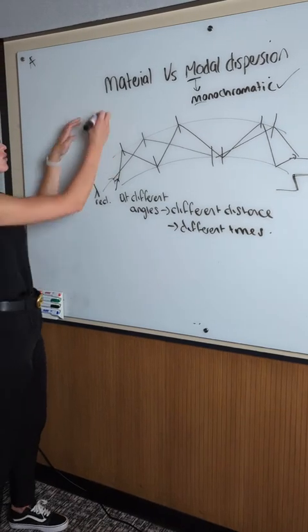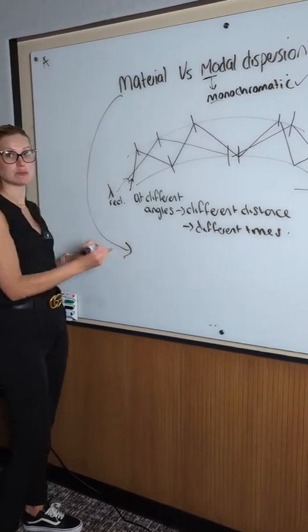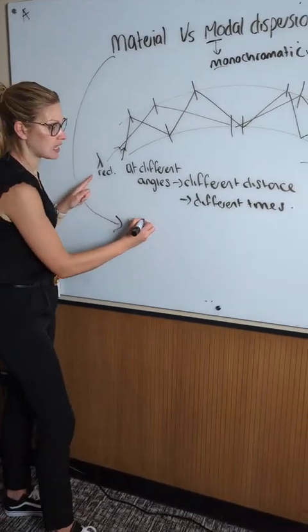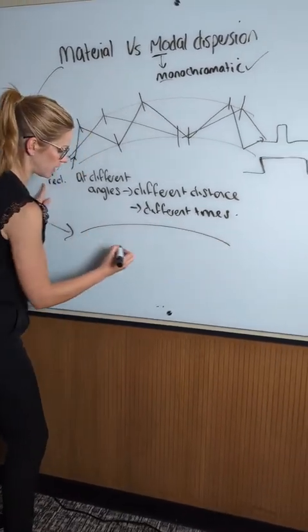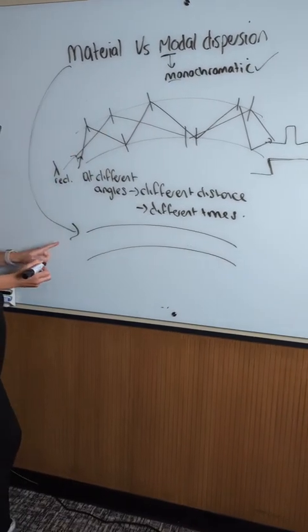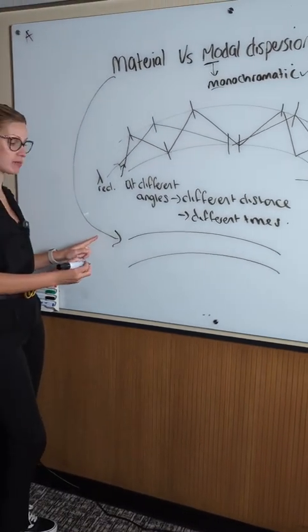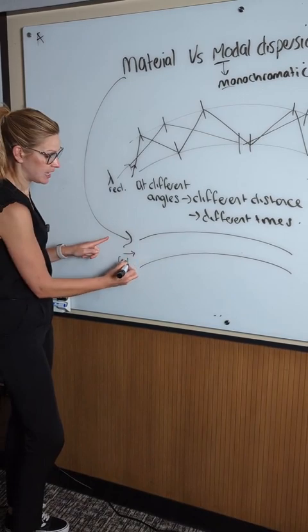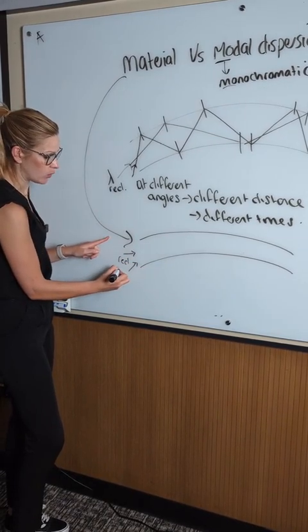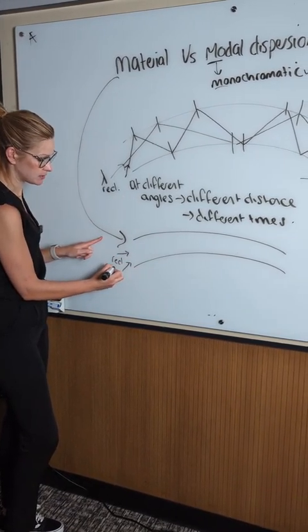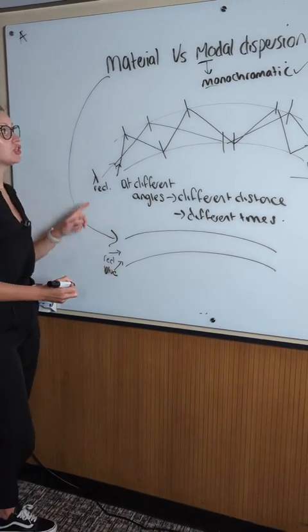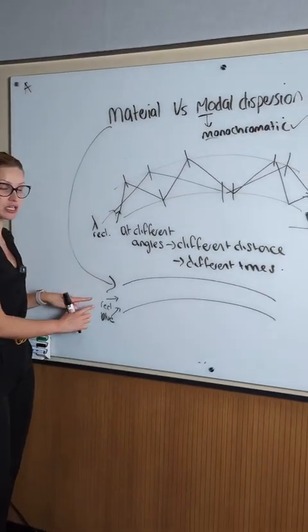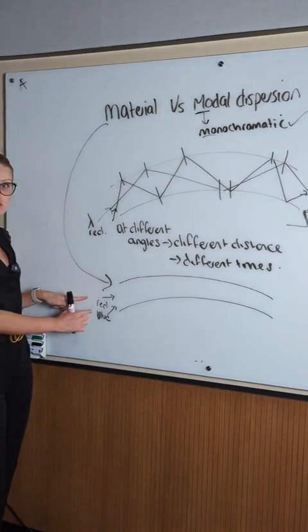So the other one — material dispersion — is because we're not using monochromatic light. So this time we're going to have our optic fiber and we're not using monochromatic light. Let's say we put red light in and let's say we put blue light in. The problem with material dispersion then is that different colors of light travel at different speeds.